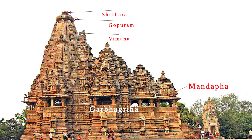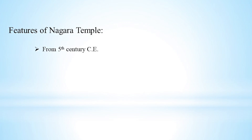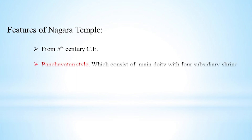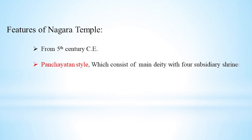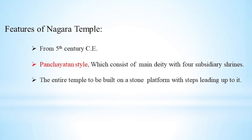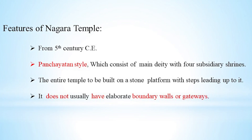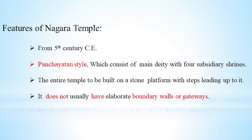The main features of Nagara temple: in the 5th century CE, Northern India developed a distinct style of temple architecture known as Nagara style. These temples followed the Panchayatan style of construction, which consists of a main deity with four subsidiary shrines present on a common raised platform. The entire temple is built on a stone platform and usually does not have elaborate boundary walls or gateways, which are features belonging to Dravidian architecture.